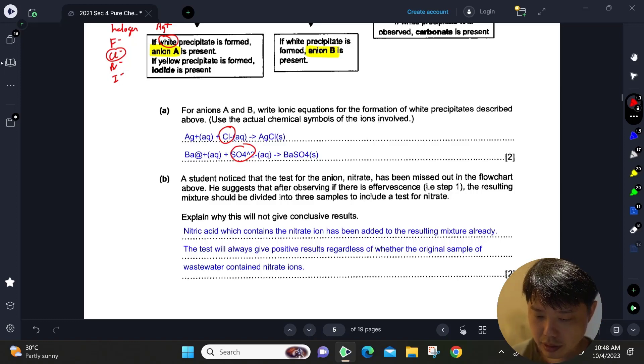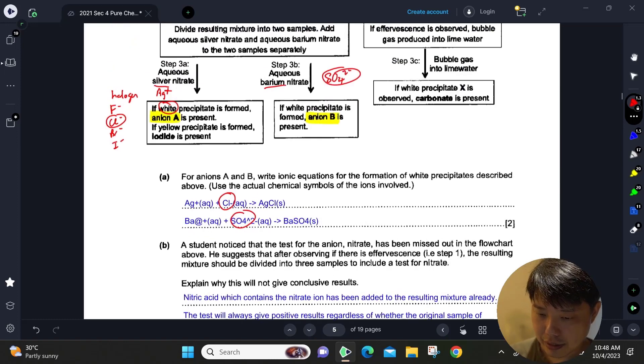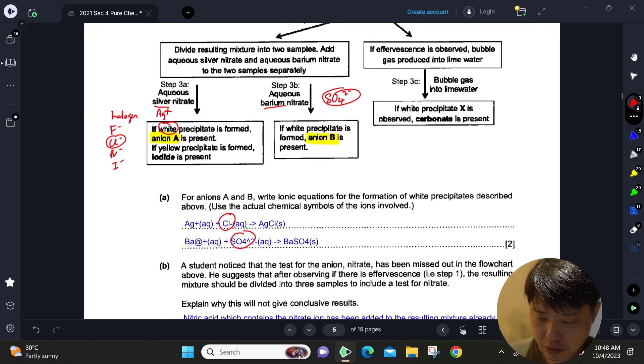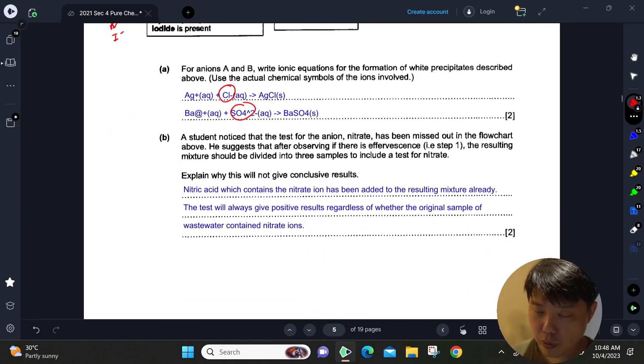Because nitric acid, which we added in the first step here, contains your nitrate ion. So after you add it yourself and then you go and test for the nitrate ion, definitely you'll get a positive result, so it doesn't make sense.